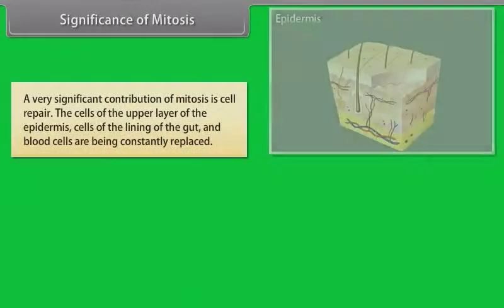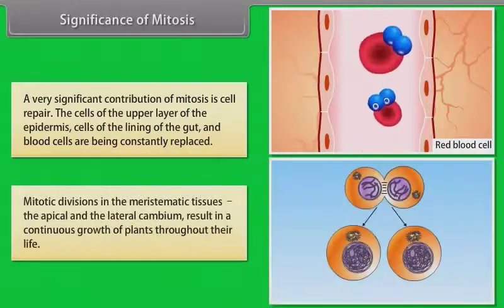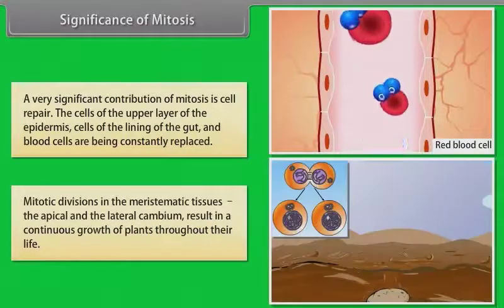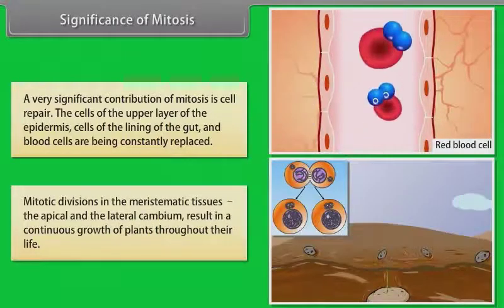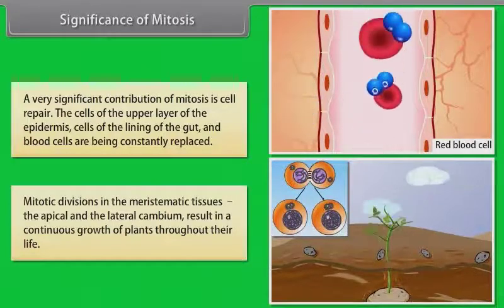A very significant contribution of mitosis is cell repair. The cells of the upper layer of the epidermis, cells of the lining of the gut, and blood cells are being constantly replaced. Mitotic divisions in the meristematic tissues, the apical and the lateral cambium, result in a continuous growth of plants throughout their life.